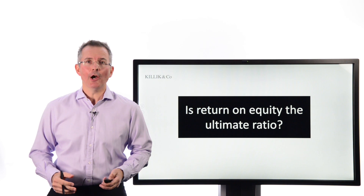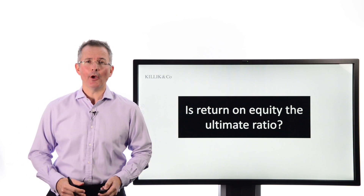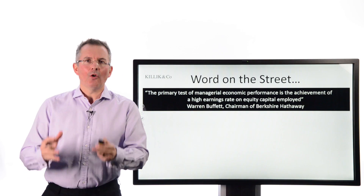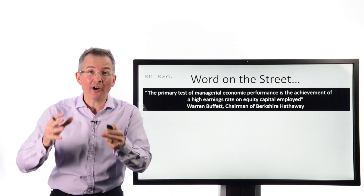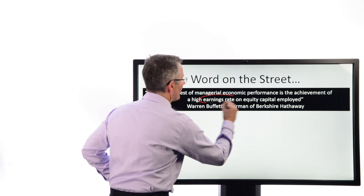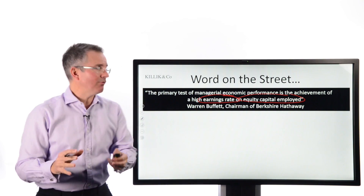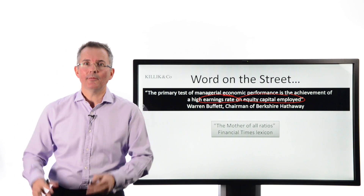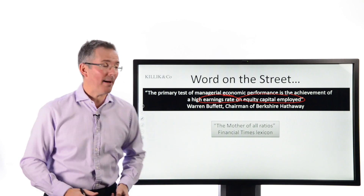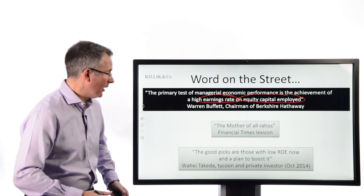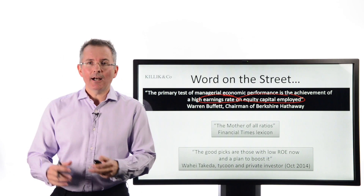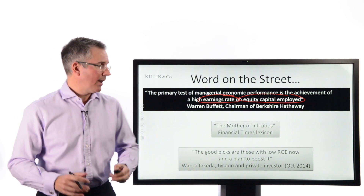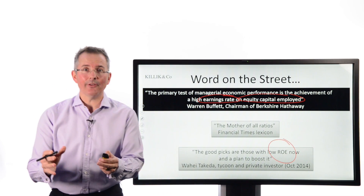It's been called by some investors the ultimate ratio - so what is return on equity all about? Legendary investor Warren Buffett, chairman of Berkshire Hathaway, once said the primary test of managerial economic performance is the achievement of a high earnings rate on equity capital employed. The Financial Times Lexicon describes it as the mother of all ratios. Legendary Japanese investor Yoshiaki Murakami noted that good picks are those with low ROE now and a plan to boost it.